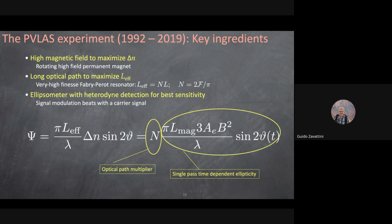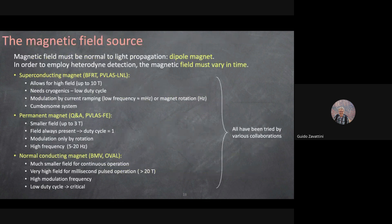The PVLAS experiment went through different phases. Other experiments worldwide include BFRT at Brookhaven, QA in Taiwan, BMV and OVAL — a French and Japanese collaboration. For magnetic fields you have three choices: superconducting magnets, permanent magnets, or pulsed normal-conducting magnets. PVLAS initially used a superconducting magnet rotating with its cryostat containing liquid helium — done at Legnaro — but the duty cycle was very low and liquid helium is expensive and energy-intensive.